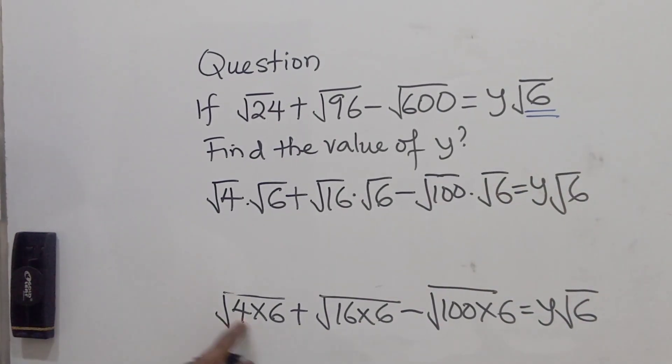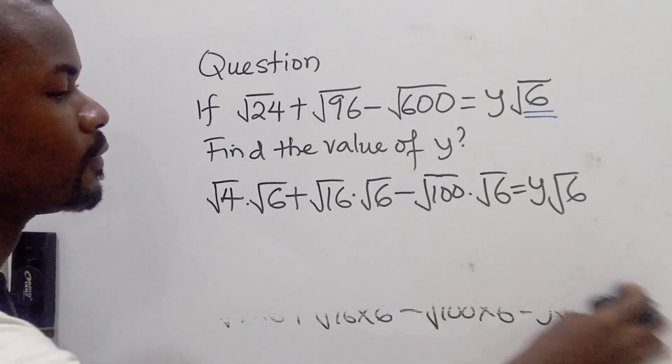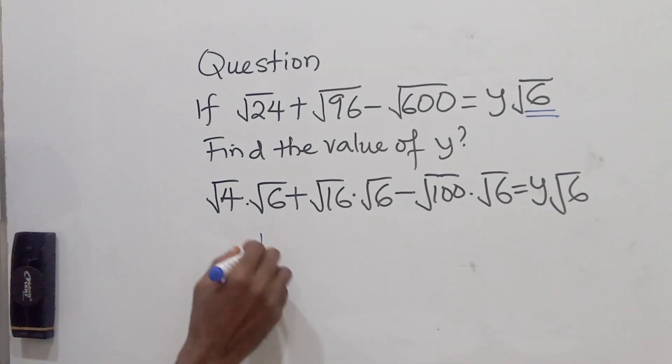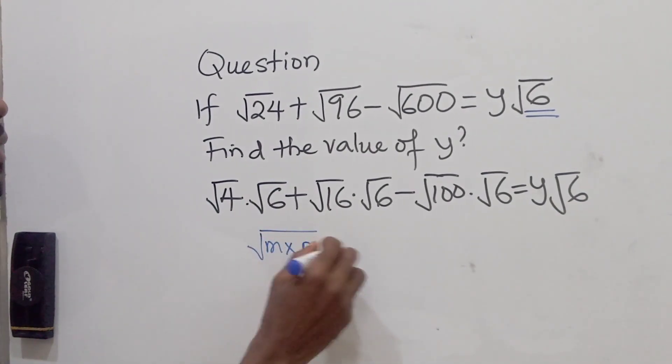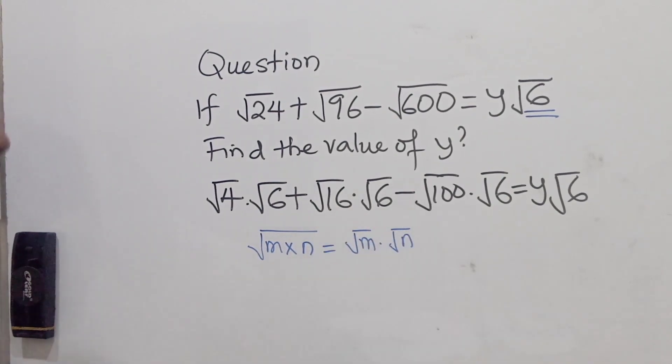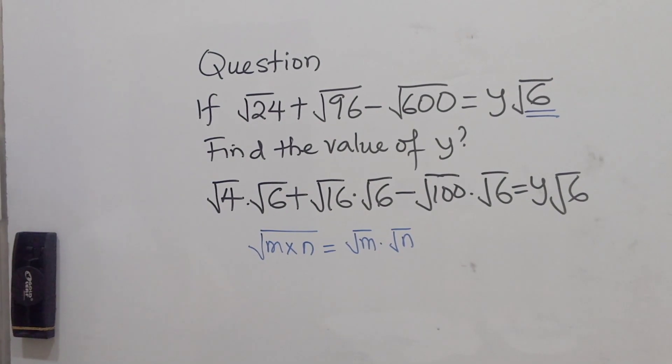So we apply this using the principle of surds. If you can recall, I'm just going to write it. Remember, if you have root n times n, you can write it as root n multiplied by root n. That was the step we applied.